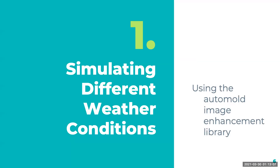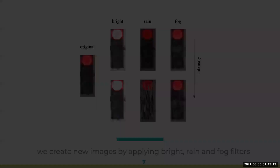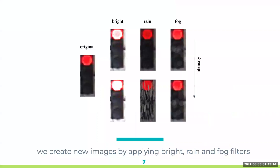First, we need to simulate the different weather conditions, and we do it using the automode image enhancement library. We create new images by applying bright, rain, and fog filters to the original images at varying intensities.